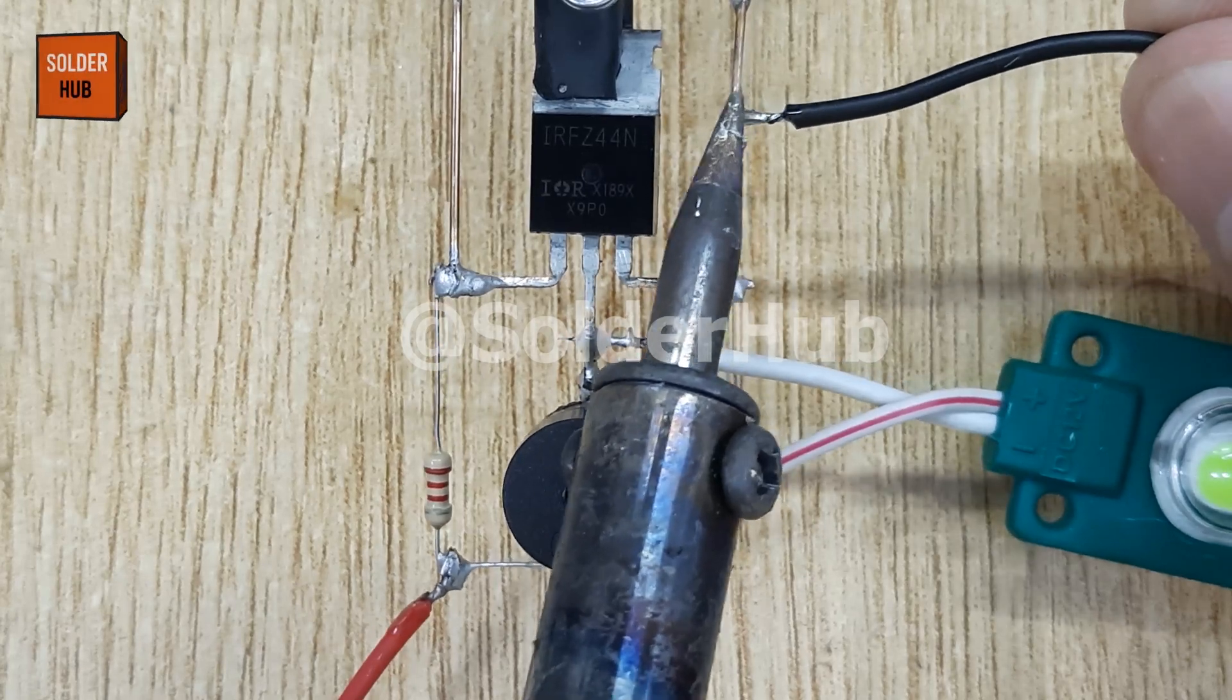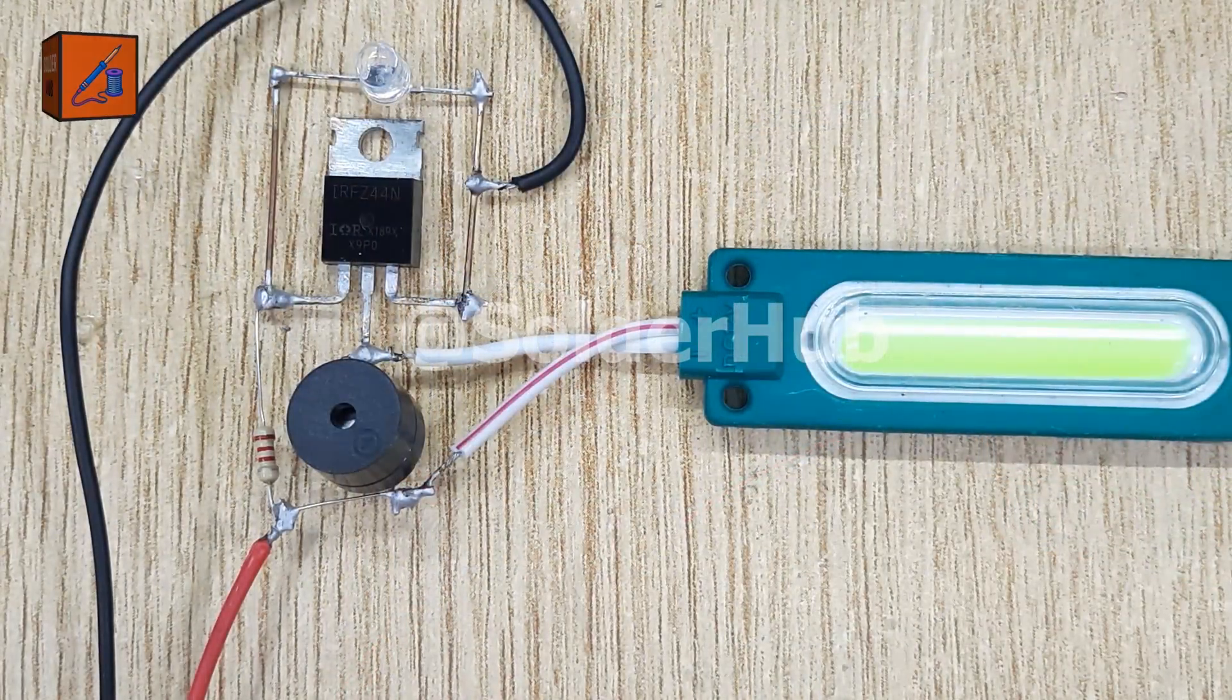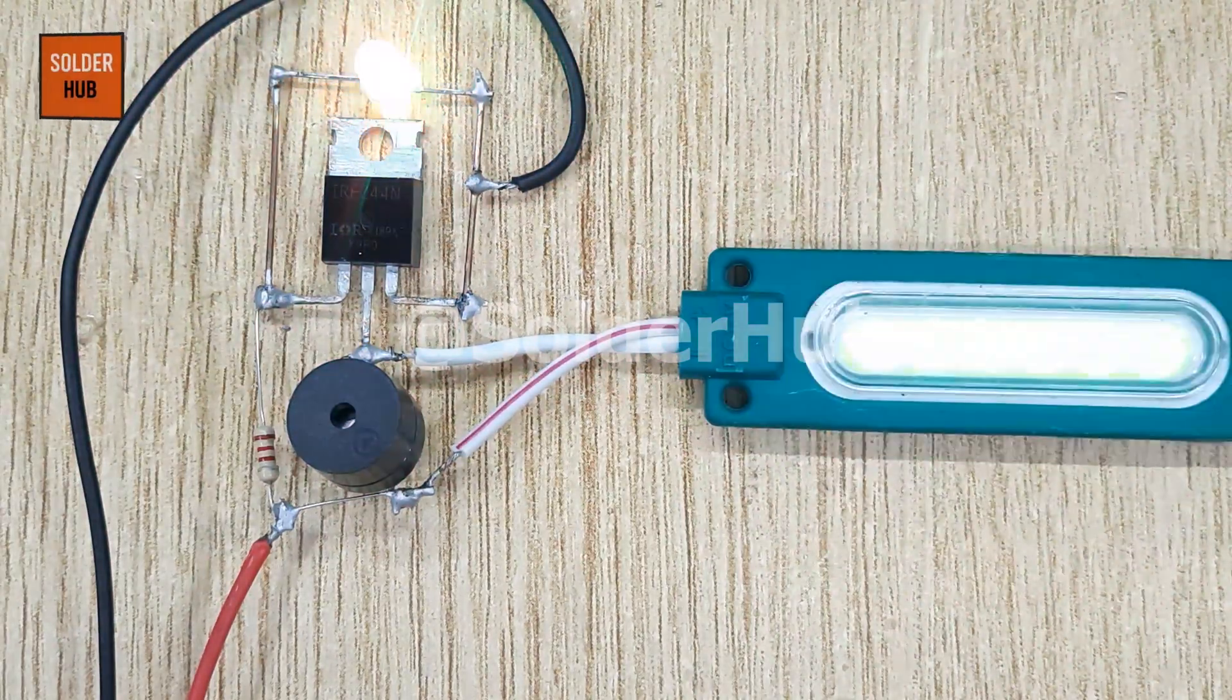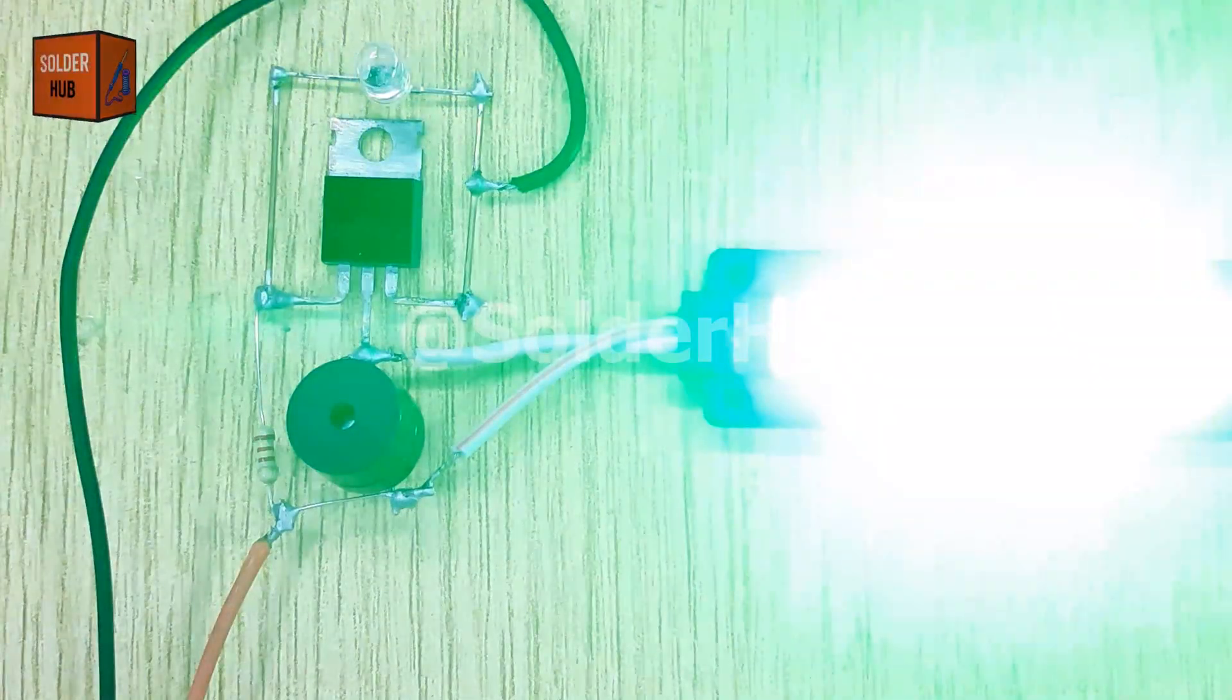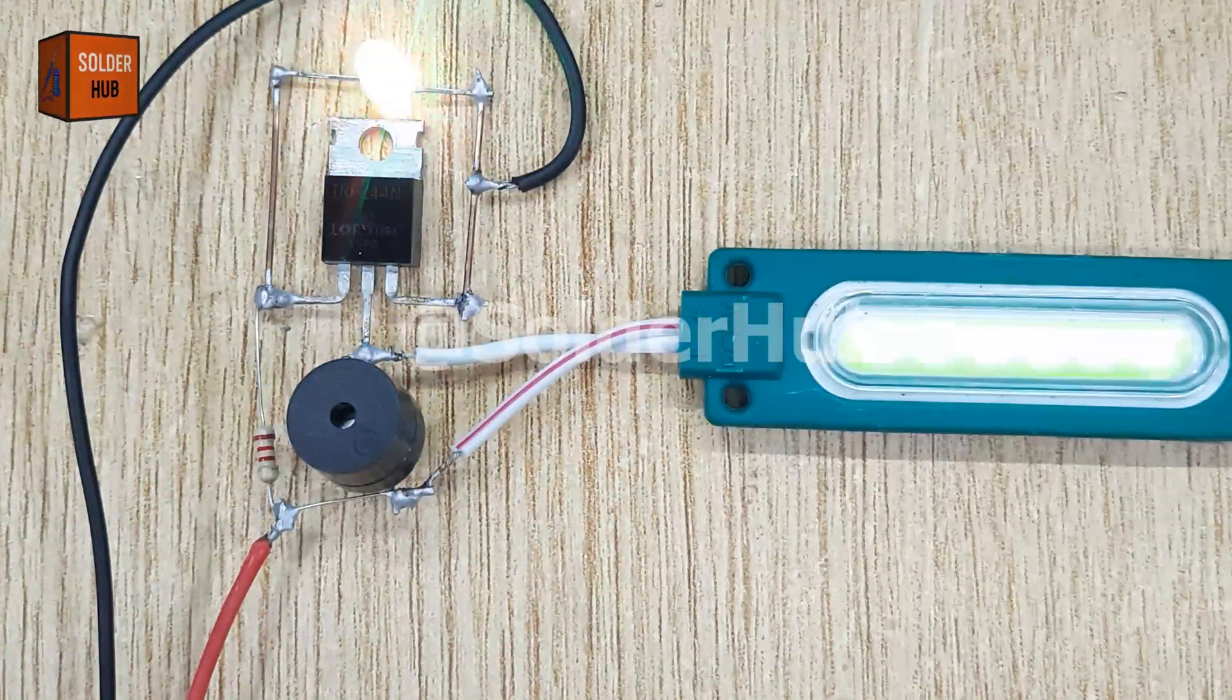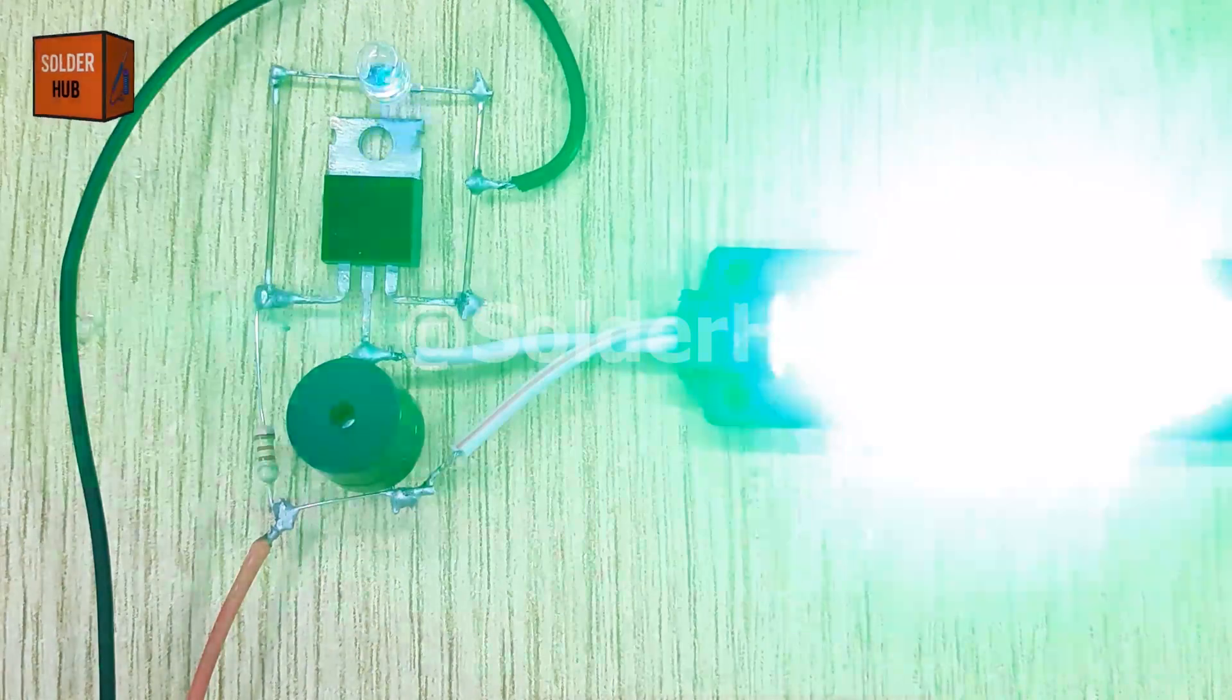Now comes the exciting part. Testing the circuit. As soon as I connect the 12-volt battery, the 12-volt LED starts blinking beautifully, producing a strobe light effect while at the same time the buzzer generates a siren sound. The flashing light and sound work together, making it perfect for a bike or bicycle accessory.